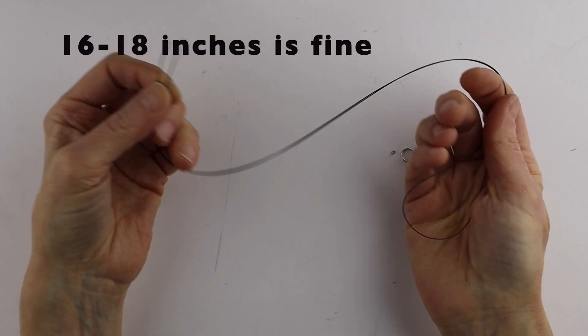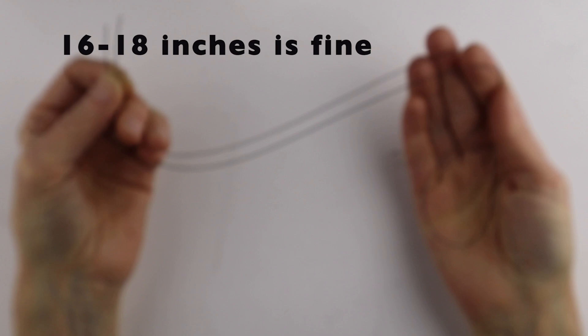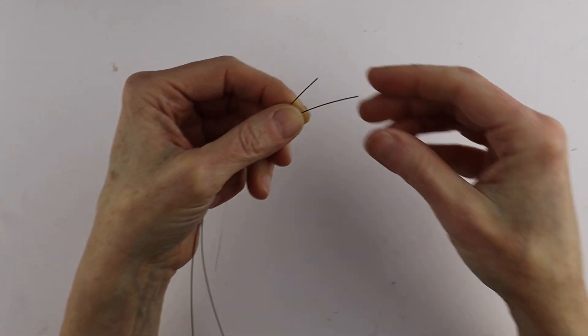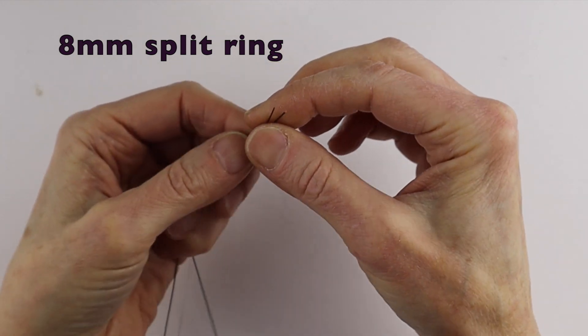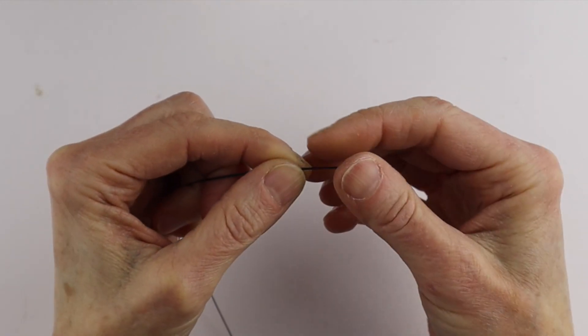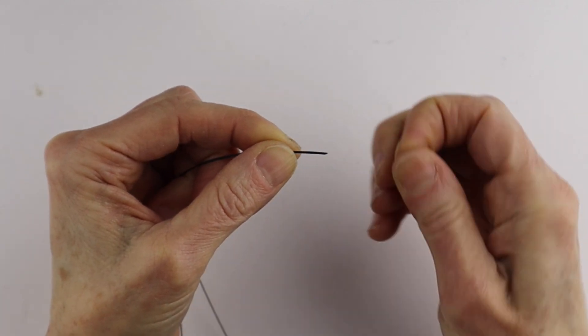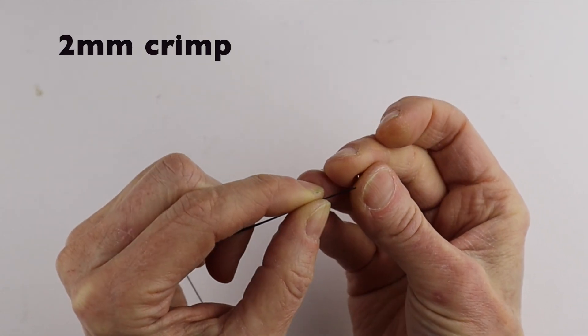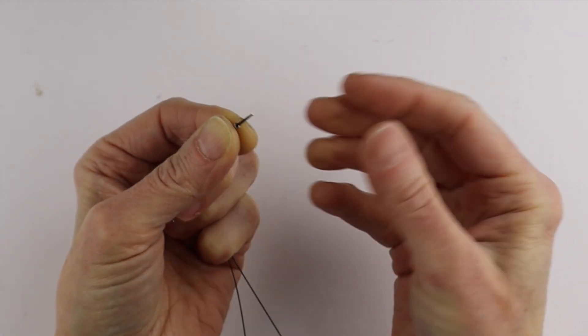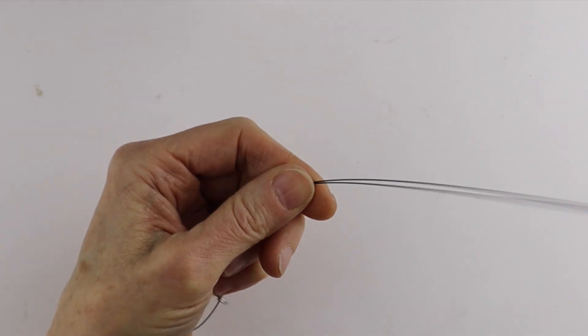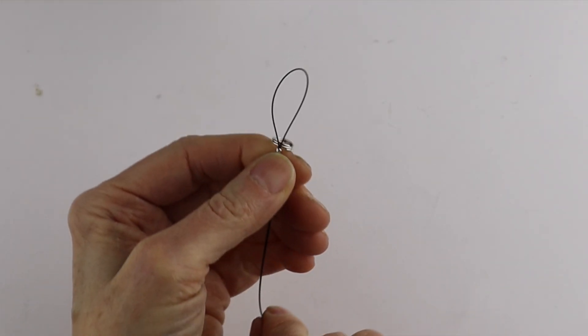To start, I cut a long piece, about 30 inches of Tiger Tail. I'll put on the split ring, then put both ends together and put on one of my crimps through both ends, bringing it down to the end.